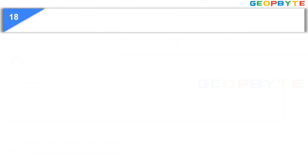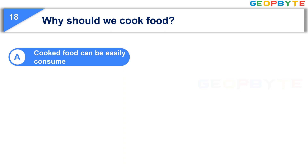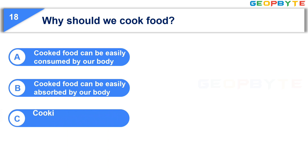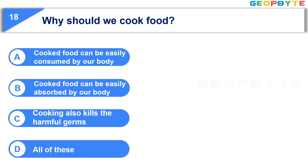Now, let us see the eighteenth question: Why should we cook food? Option A, Cooked food can be easily consumed by our body. Option B, Cooked food can be easily absorbed by our body. Option C, Cooking also kills the harmful germs. Option D, All of these. Your time starts now.